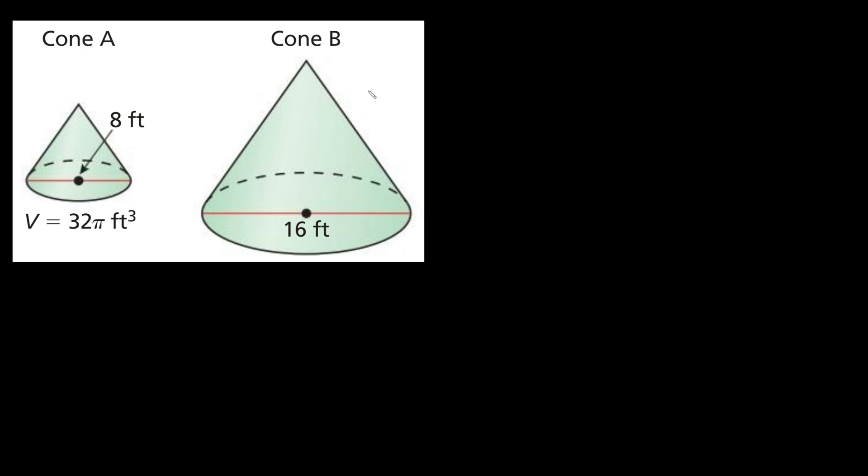And for the big cone, cone B, we're given the diameter as 16 feet but we don't know the volume. So that's what we're trying to find in this problem: the volume of cone B.